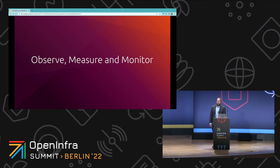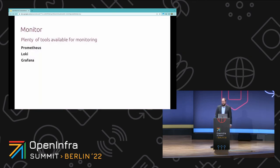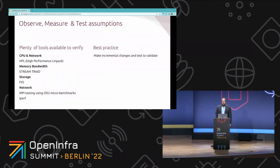Overall, it's always about observing, measuring, and monitoring. Consider using a comprehensive system monitoring tool to observe, measure, and validate any assumptions made on performance and limitations — it helps identify bottlenecks such as CPU, memory bandwidth, and I/O limitations. Make incremental changes and test to validate. Known tools include High Performance Linpack, which is useful for identifying both CPU and networking limitations; Stream Triad for memory bandwidth; FIO for storage; and for networking, various MPI tests and iPerf.